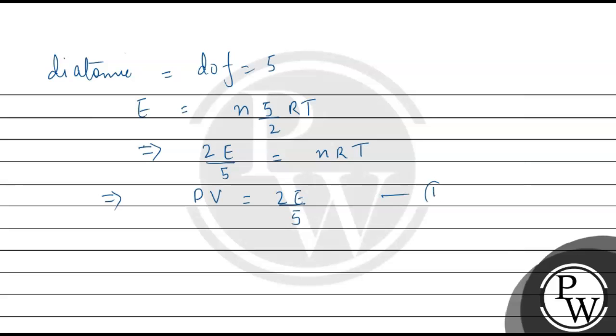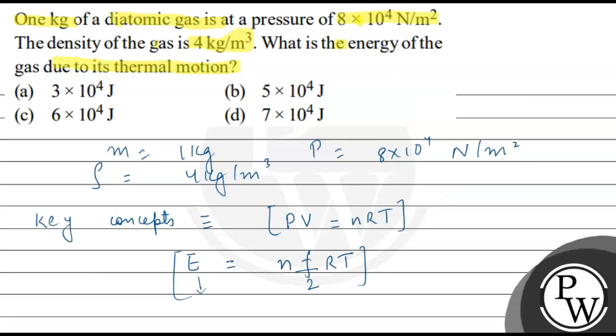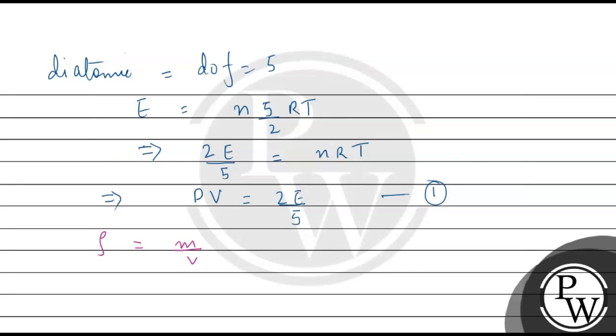This is done. Now what do we want? Density is given. And what is density? Mass by volume. Mass is 1 kg and density is 4 kg per meter cube is equal to mass 1. So volume is 1 by 4. It will be 1 by 4 meter cube. This will be volume.